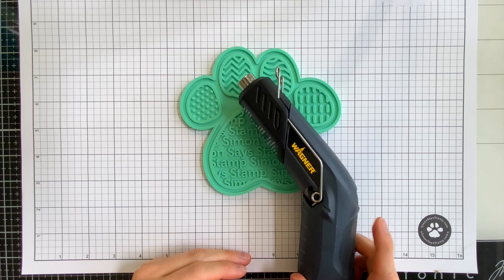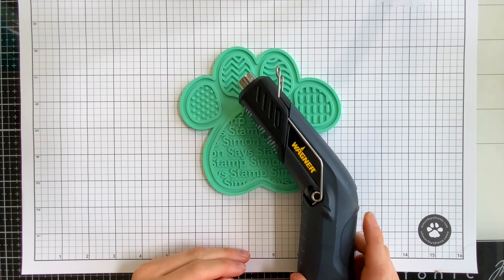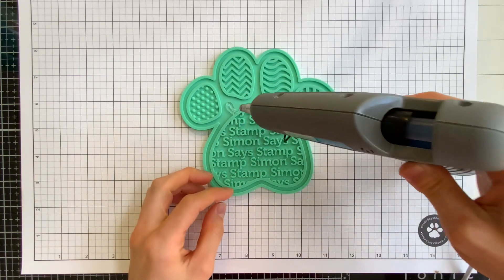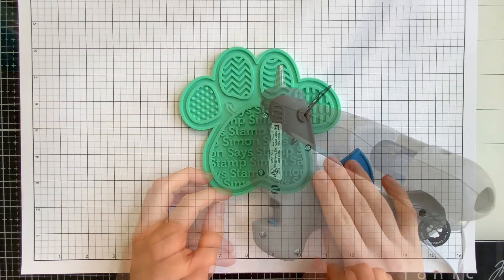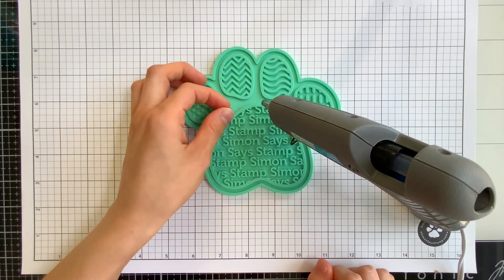I recommend protecting your work surface by laying the tools on the Positively Everything tool. The silicone material can take the hot temperature safely and even glue peels right off when dry.